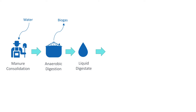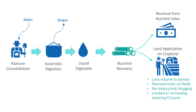How does it work? Following anaerobic digestion, the liquid digestate is moved through a process with our superfiltration membranes that recovers nitrogen and phosphorus from the stream. The process allows nitrogen to become a saleable product, putting money in your pocket.